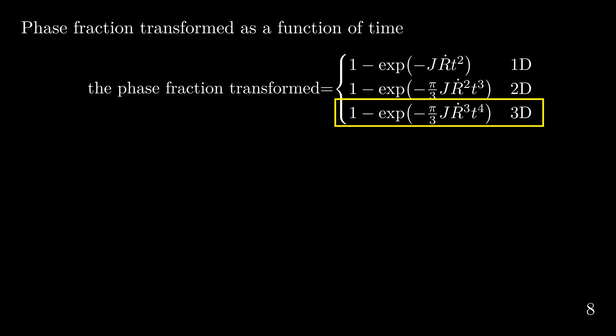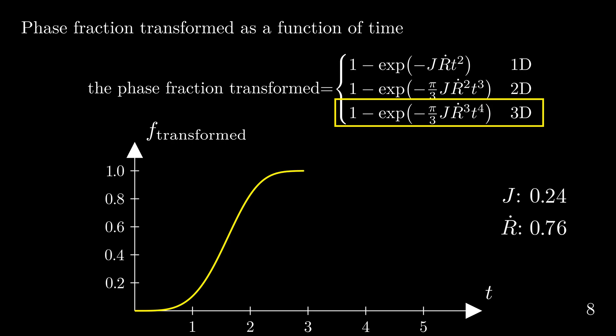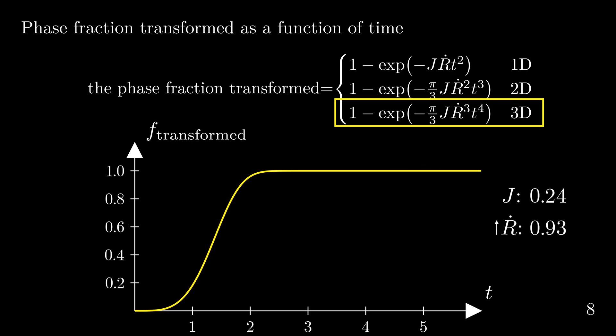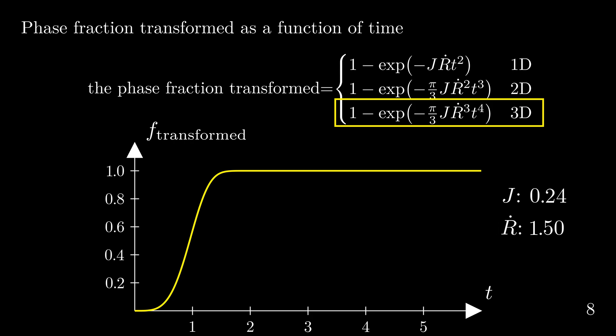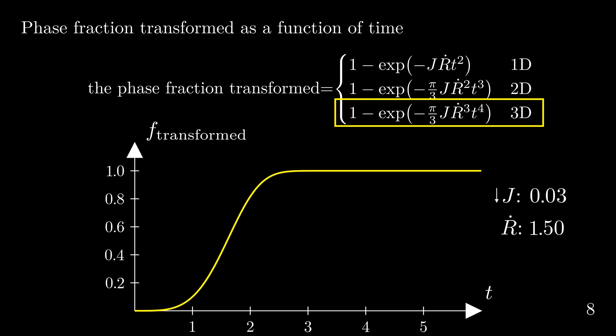The last thing I want to do is to once again plot the JMAC equation and see what happens when we change the values for the growth and nucleation rates. As we increase the growth rate while holding the nucleation rate constant, the time it takes to reach almost 100% transformed decreases — which makes sense because the nucleating phase is growing faster after nucleating. Then, holding the growth rate constant and decreasing the nucleation rate, the time to reach 100% transformed increases, since with fewer nuclei it takes more time for the nucleating phase to grow to completion. We can see that with this analytical expression, we can gain physical insight very easily just by plugging in numbers and investigating how the output changes with the inputs. This is the end of my presentation. I hope you enjoyed it and learned something new. Thank you for watching.